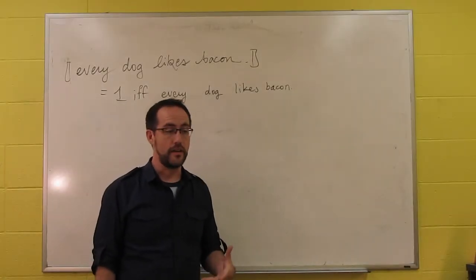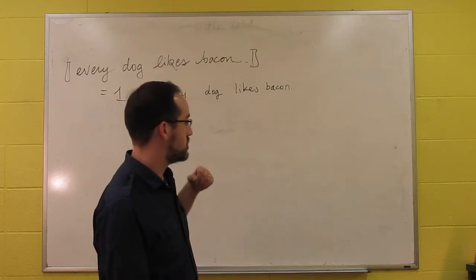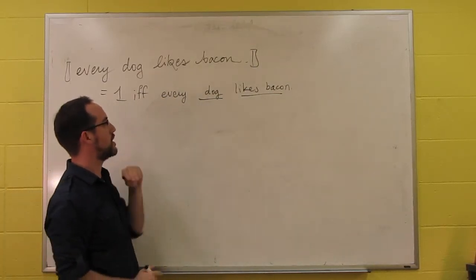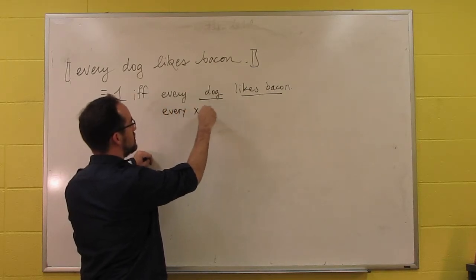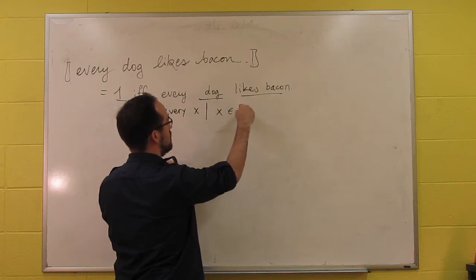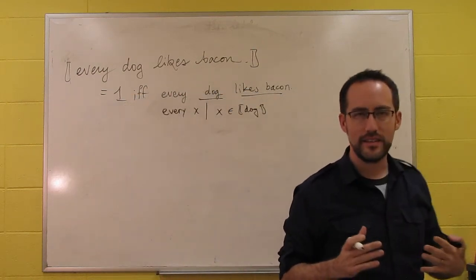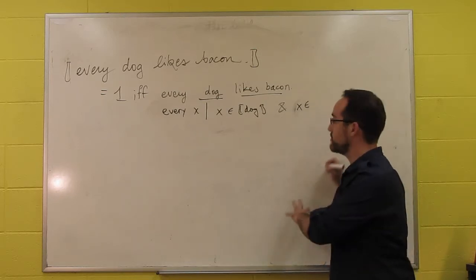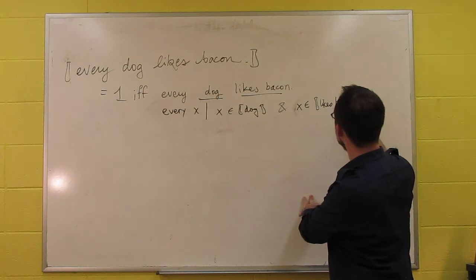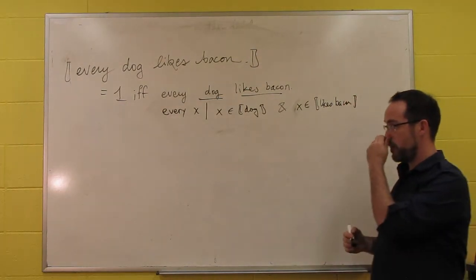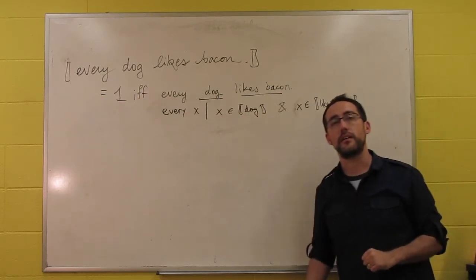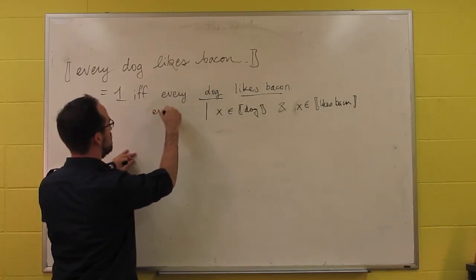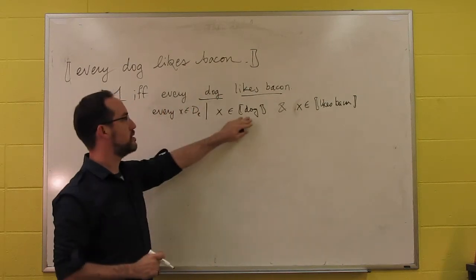Every is going to be a little bit different. It says that you give it two properties and that anything you can find in this one is going to have this one too. But how does it do that? The first thing we want to think about are the two properties. The syntax tells us it's dog and liking bacon. Every dog likes bacon. We can think of it this way: every X such that X is in the set of dogs is also in the set of things that like bacon.